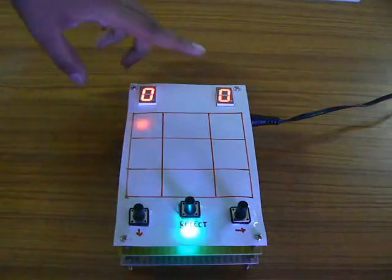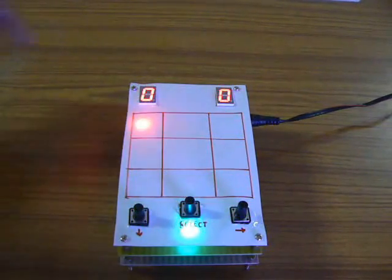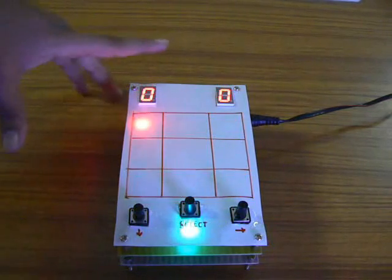This is the scoreboard which maintains the score. It is showing that both player 1 and 2 are at score 0.